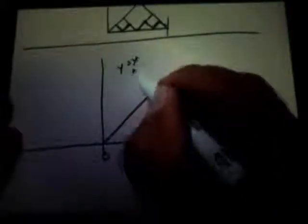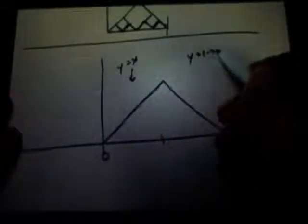This is y equals x up to one-half, and y equals one minus x thereafter. So y equals x on this side, y equals one minus x on this side.